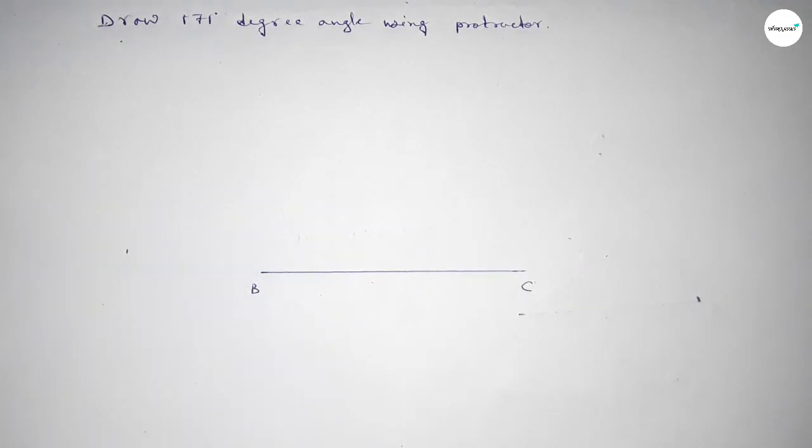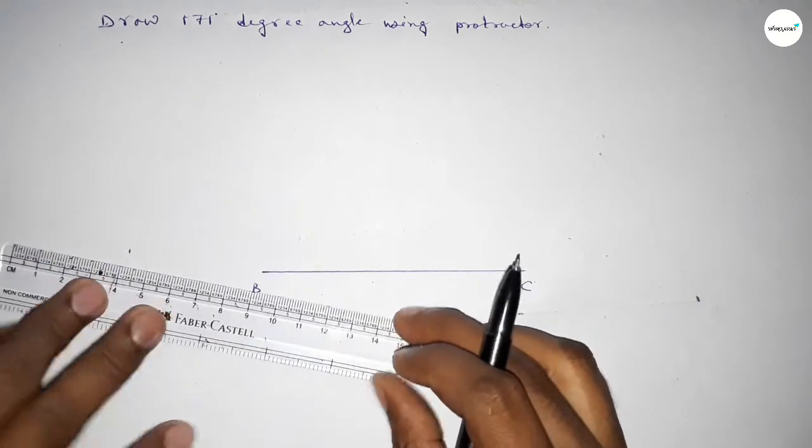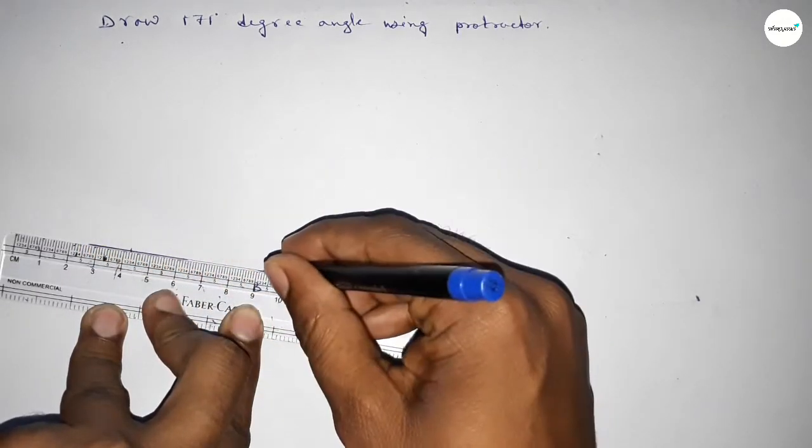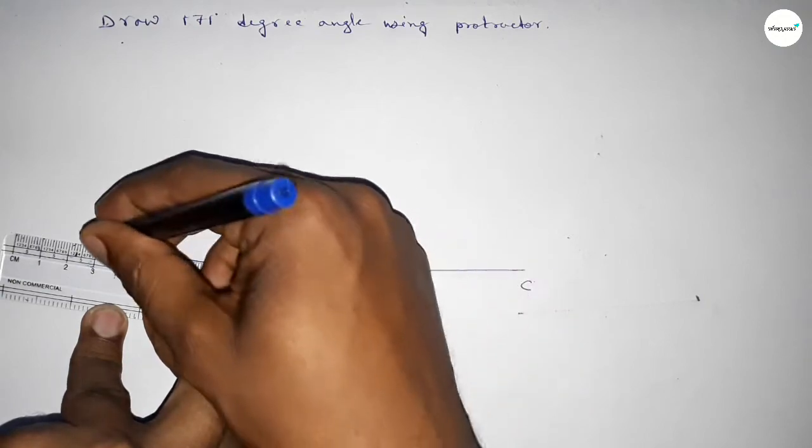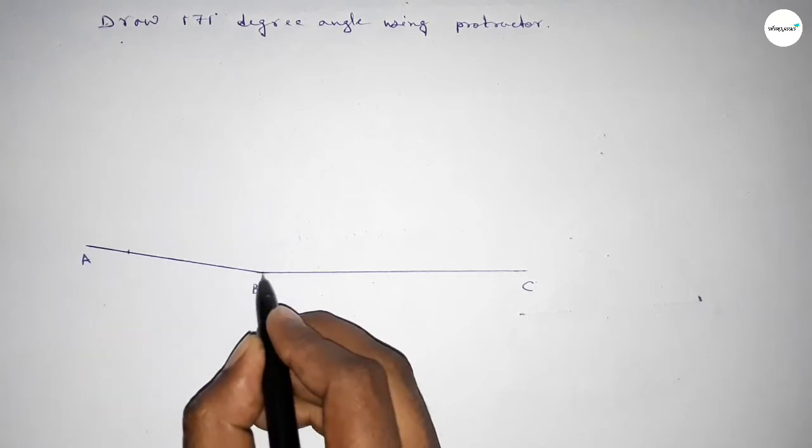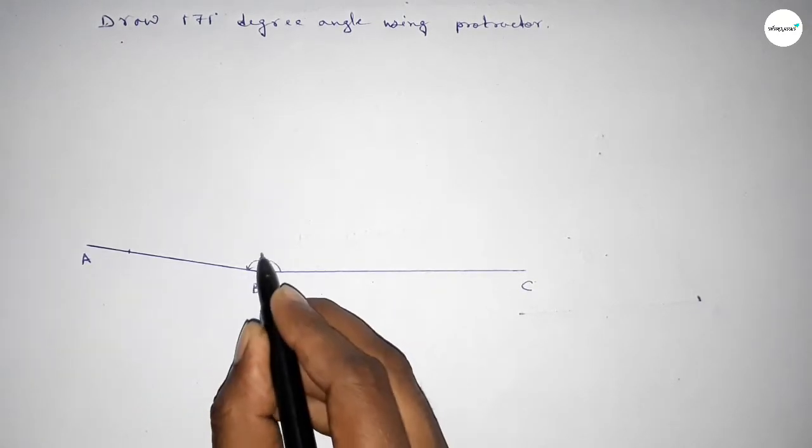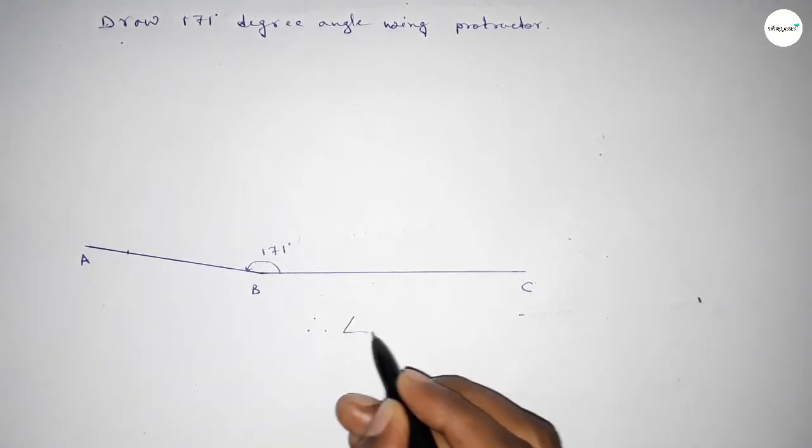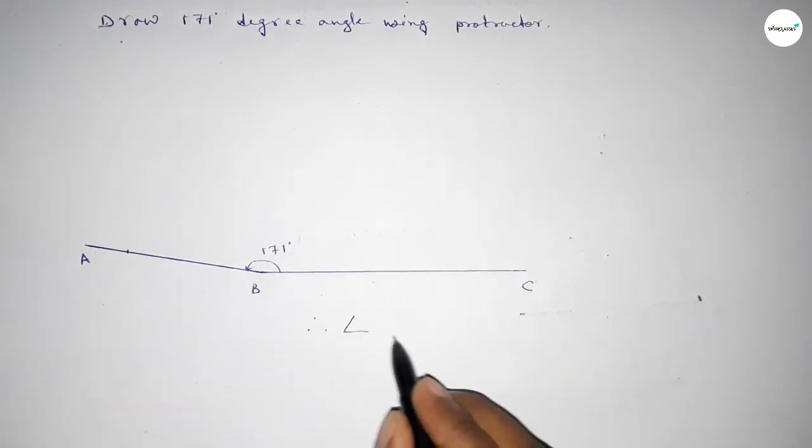Next, we have to join this to get 171 degree angle. So we got here 171 degree angle and taking here point A. So angle ABC up to this is 171 degree angle.